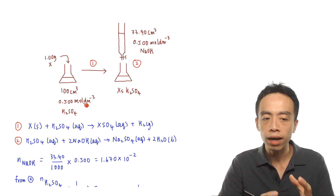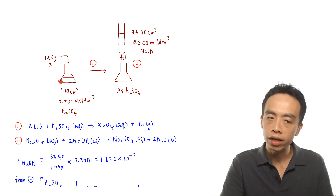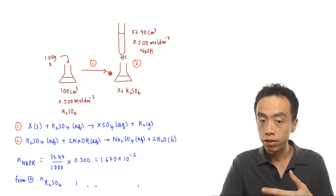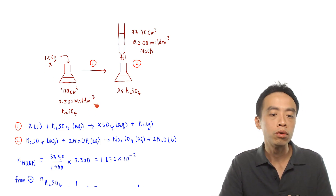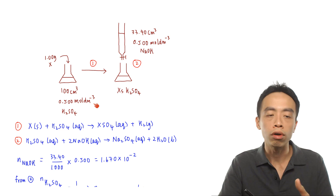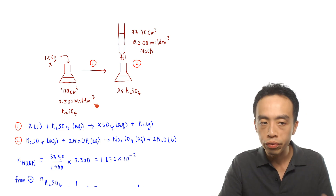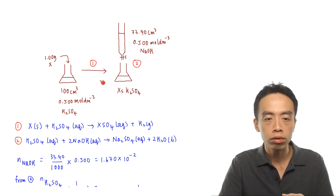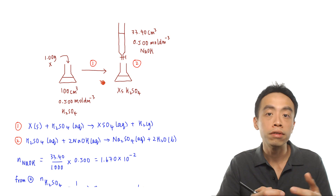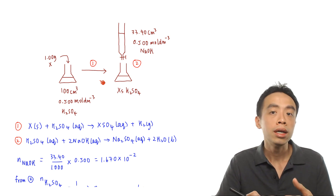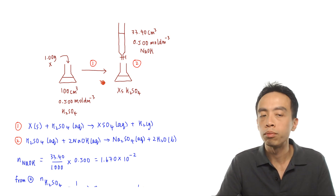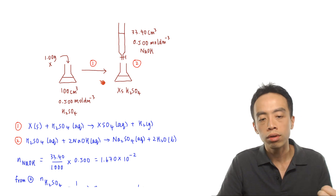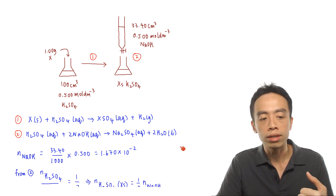Part of the H₂SO₄ reacts with X, so the difference will give me the number of moles of H₂SO₄ that actually reacted with X. Then from the mole ratio of the first reaction, I can determine the moles of X. That is roughly the plan, so let us run through the steps.